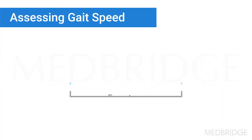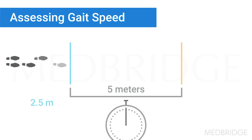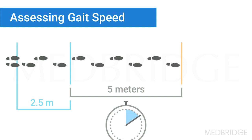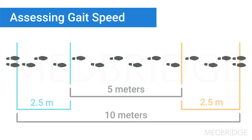For instance, if I was going to do a five-meter walking test and time that, I may give somebody an acceleration distance of two and a half meters to get going, time the middle five meters, and then give them the other two and a half meters to finish. So I needed a 10-meter path in order to do my five-meter test.